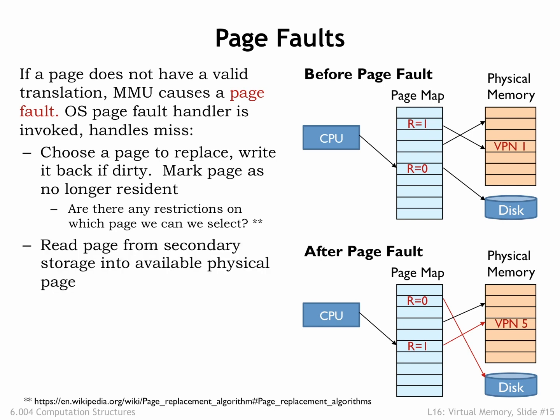Next, the desired virtual page is read from secondary storage into the selected physical page. In our example, virtual page 5 is now loaded into physical page 4. Then the R bit and PPN fields in the page table entry for virtual page 5 are updated to indicate that the contents of that virtual page now reside in physical page 4.